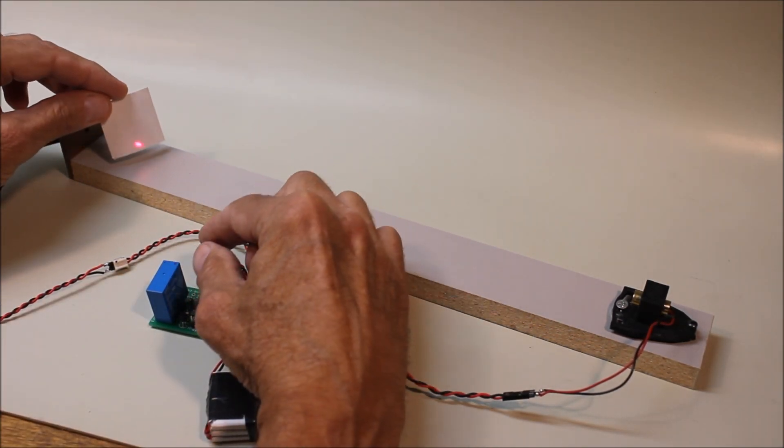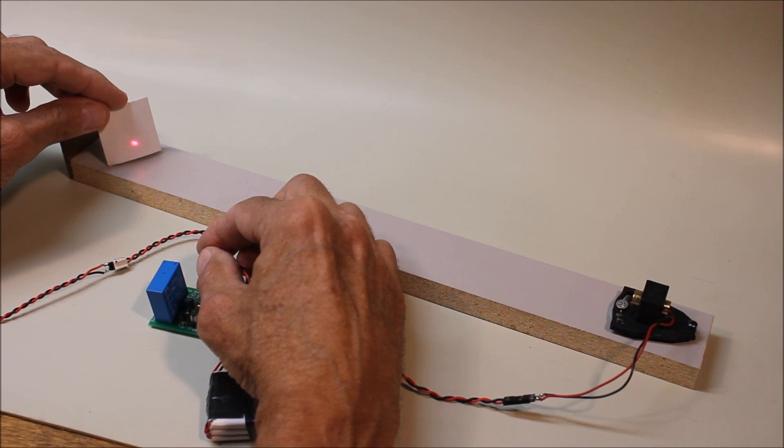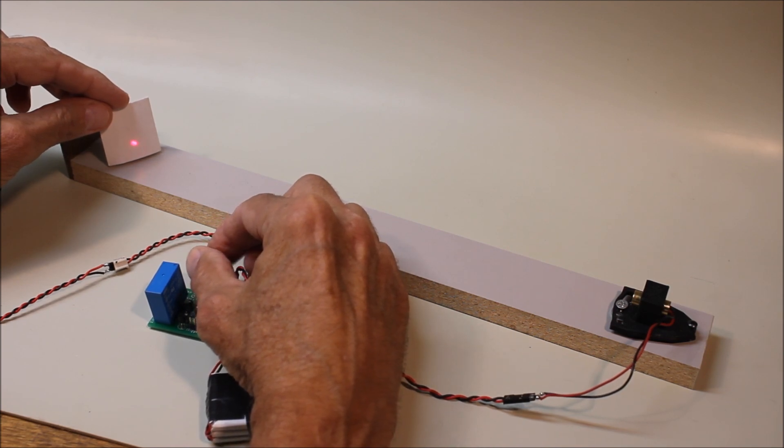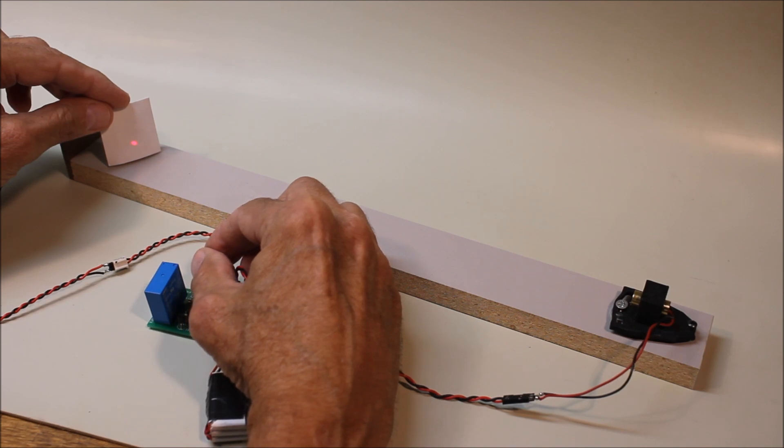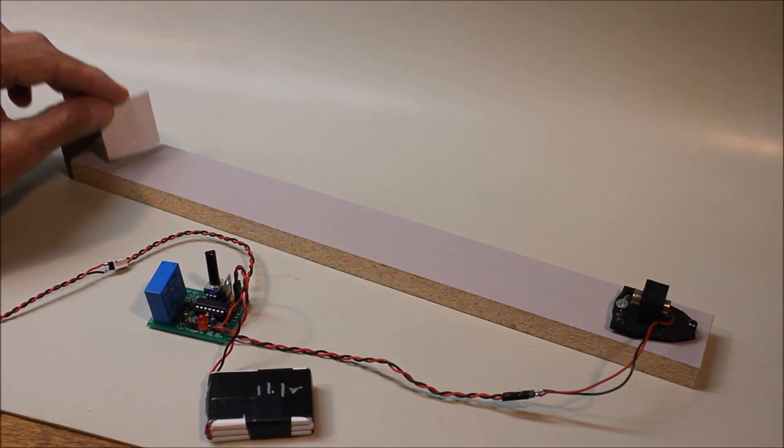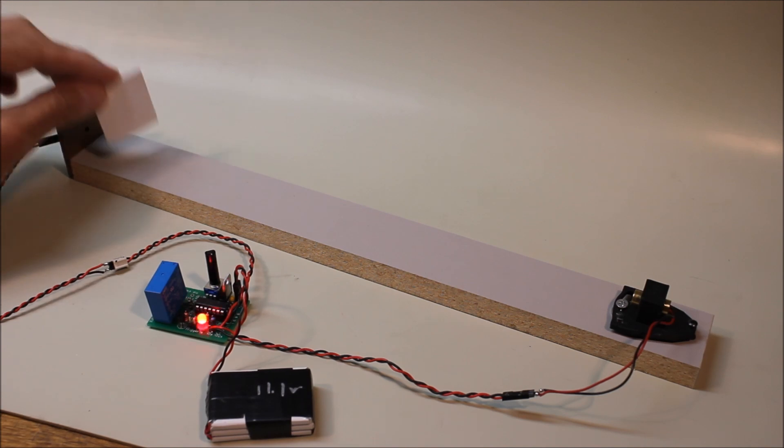And you'll notice as I turn the pot, you can see the laser beam on the piece of paper. As I turn it clockwise, the beam begins to become dimmer and dimmer and dimmer until it just about disappears. But again, it still works.